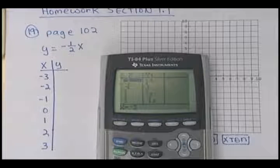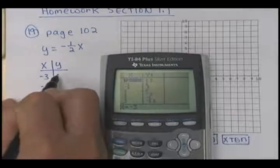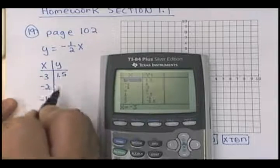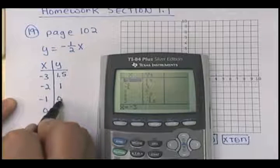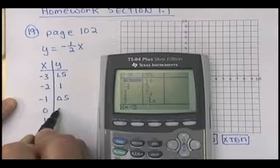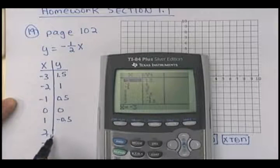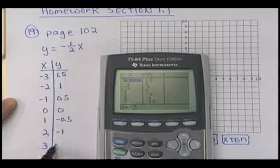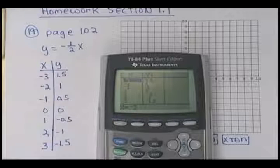If you've got your setup on ask, again, put those values in there. So, what did we get for negative 3? 1.5, negative 2 is 1, negative 1 is 0.5, 0 is 0, 1 is negative 0.5, 2 is negative 1, and 3 is negative 1.5. Again, I'm just getting that off my calculator there.